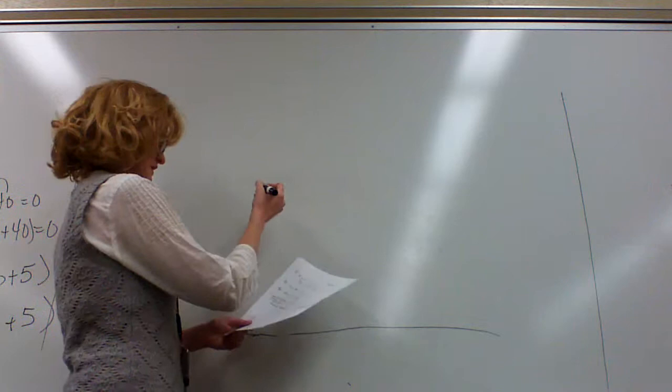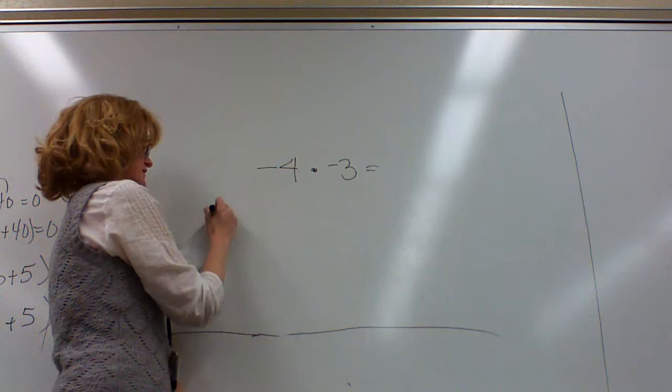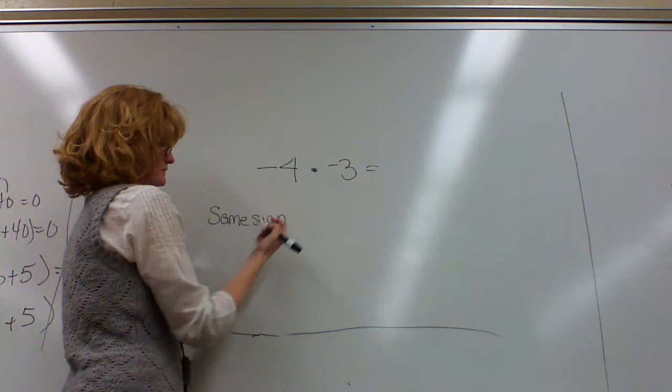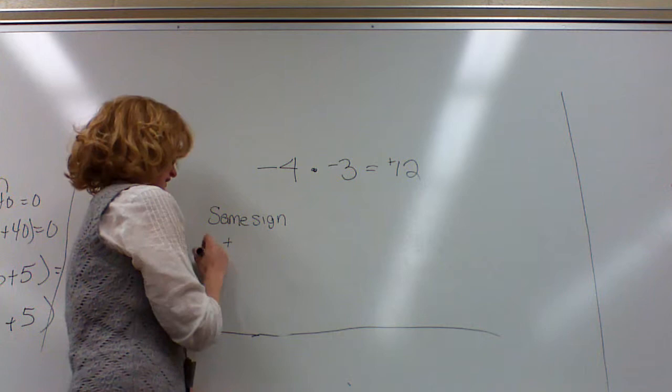Now we're going to move on to part 2. We're going to multiply integers. There are certain rules that go with multiplying integers too. Let me do one example, and I'll show it as I do the example. These two have the same sign. When they have the same sign, they become positive, and then you still do the multiplication. 4 times 3 is 12, and it becomes positive.